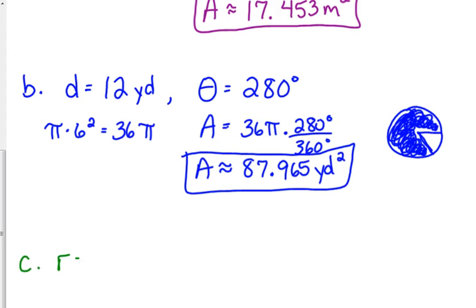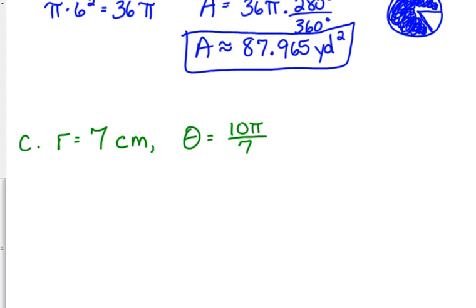So let's do one with radians. Let's say that the radius is 7 centimeters, and theta is, let me go with 10 pi over 7. So theta is 10 pi over 7. Just as an illustration, 10 pi over 7, 10 over 7 is a little bit more than 1. So it's about like this. This is how much of the circle we're talking about, so a little bit more than half. So if our radius is 7, then our area of the entire circle would be 49 pi, 7 squared, 49, 49 pi.